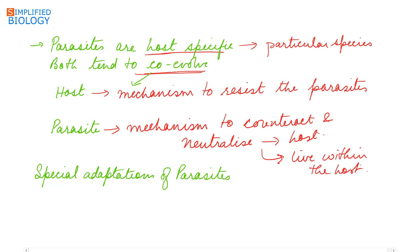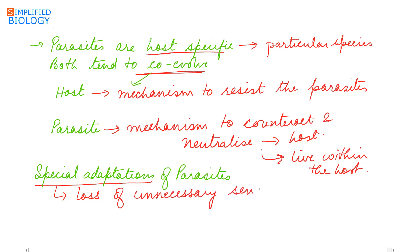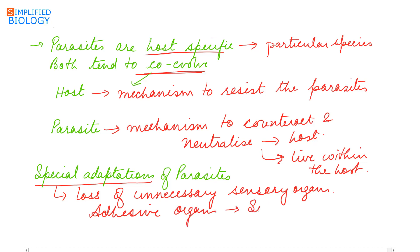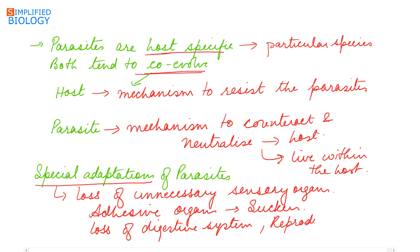Since the parasite depends on the host for food and shelter, it develops special adaptations. These include loss of unnecessary sensory organs, development of adhesive organs such as suckers by which they get attached to the host, loss of the digestive system, and an increase in reproductive potential or reproductive capability.